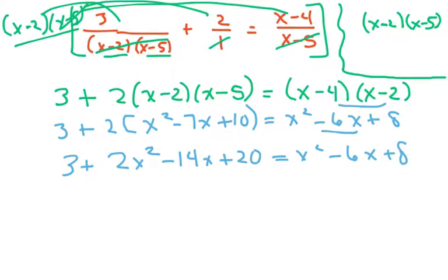Then I'm going to do this one last step and do 2x squared minus 14x plus 20 equals x squared minus 6x plus 8. Now, I'm going to move everything over to the left, and I'm going to combine these as well. So 3 plus 20 is 23. You're subtracting x squared, you're adding 6x, and you're subtracting 8.